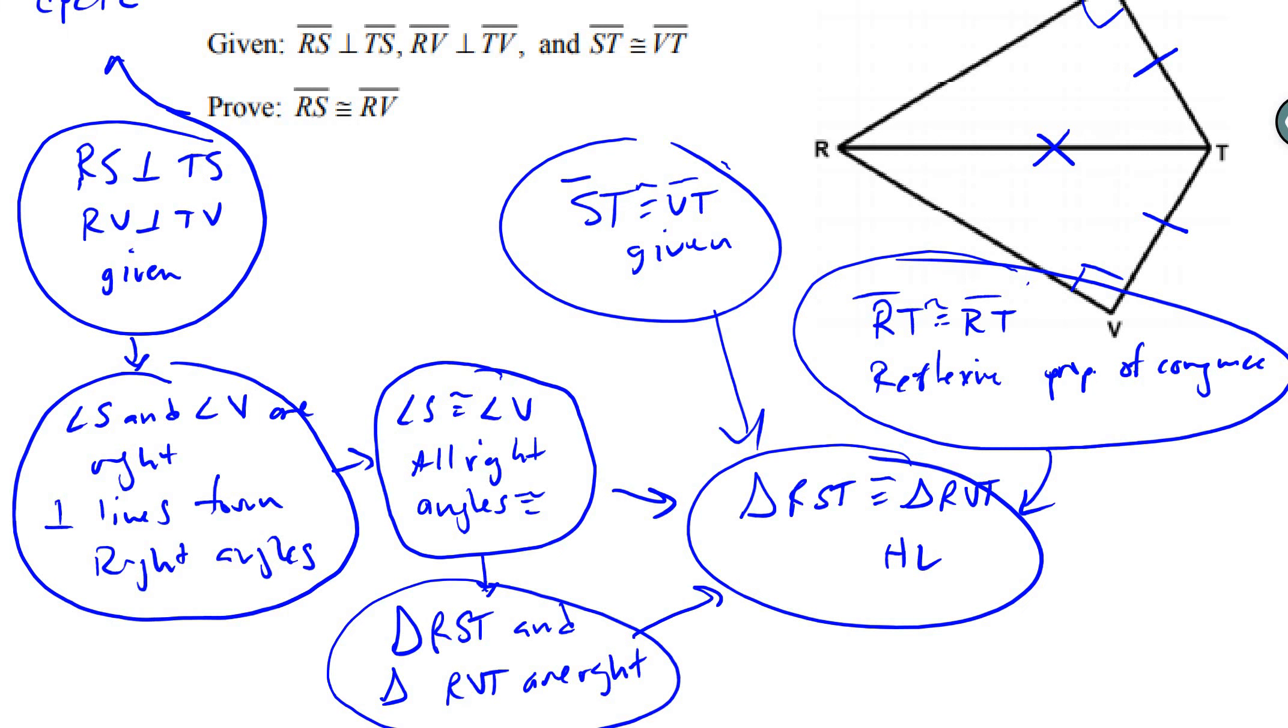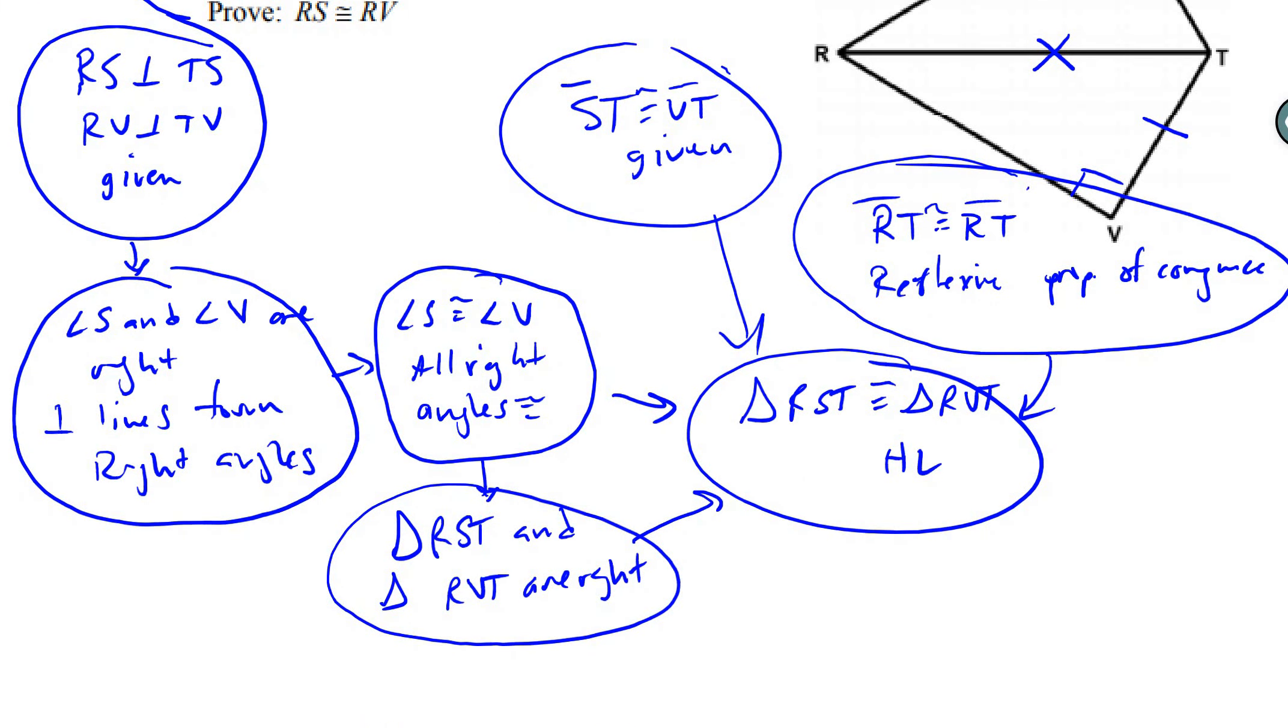Now, unfortunately, that's not what they're asking us to do. They are asking us to prove that RS is congruent to RV, and we know that by CPCTC. Remember, this always comes after proving that triangles are congruent.